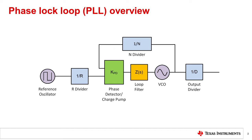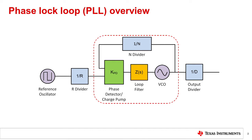Before we discuss the key parameters and specifications, let's do a very quick PLL review. First of all, where is the loop in the phase-locked loop system? The loop is here. Most key parameters are therefore related to the N divider, VCO, phase detector frequency, and loop filter.